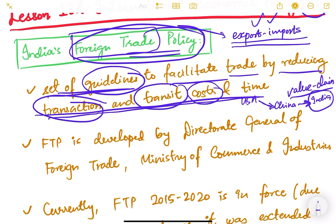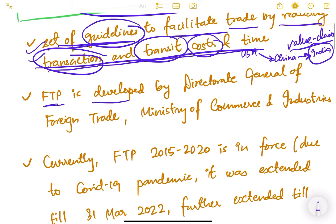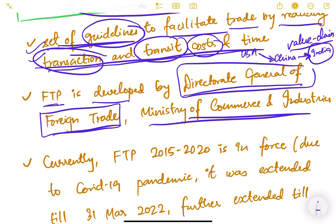Whenever anything is imported or exported, there are customs clearances — how can we reduce that time? There are bureaucratic procedures, applications, and approvals required. These guidelines help foreign traders navigate the process. Foreign trade policy is developed by the Directorate General of Foreign Trade, or DGFT, which is a body under the Ministry of Commerce and Industry in India.